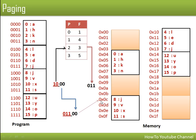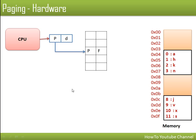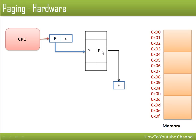To summarize the conversion process: the CPU provides a logical address containing a page number and an offset. The page number is used to find the corresponding frame number — the frame in which that page is stored — using the page table. After fetching the frame number, the offset is attached to it, giving us the physical address. This is how a logical address is converted to a physical address. Thank you for watching.